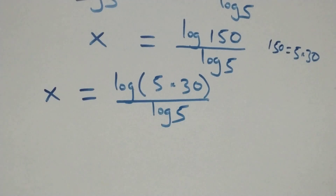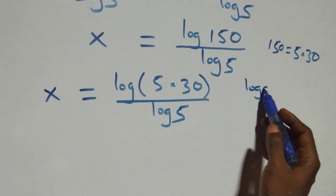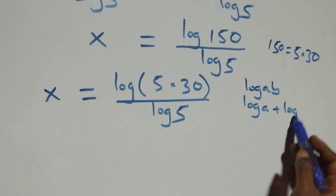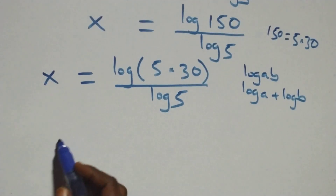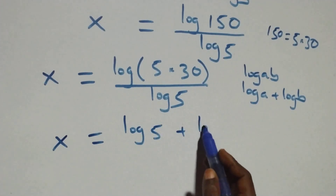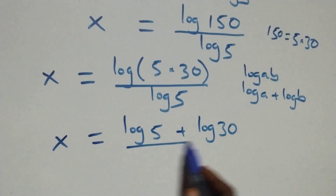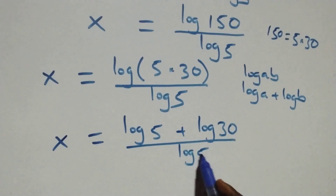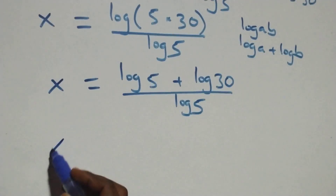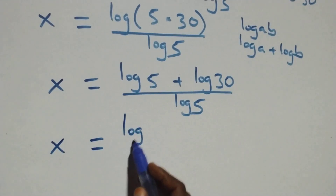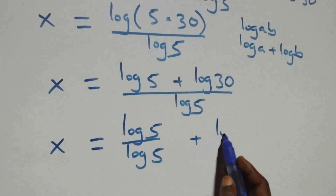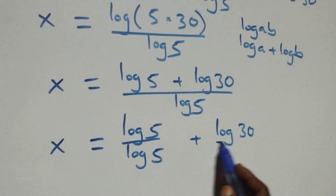This follows the product law of logarithms: log(a times b) is the same as log a plus log b. So we can express this as x equals (log 5 plus log 30) over log 5. We then separate this into two fractions: x equals log 5 over log 5 plus log 30 over log 5.